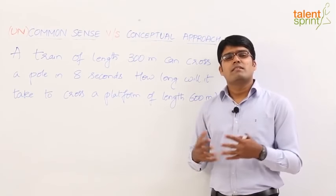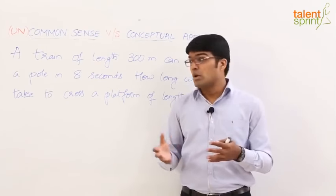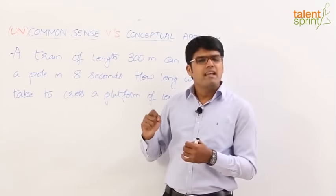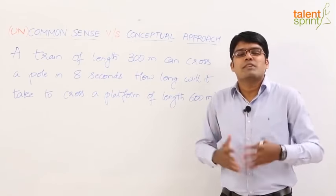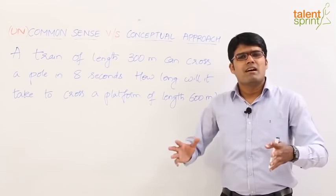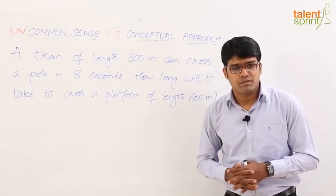I am sure the regular way of solving this question involves finding out the speed of the train first because we know what distance the train covers in 8 seconds, and then with that speed and the length of the platform, we try to find out the new time. It takes about 15 to 20 seconds to get the final answer for this question.